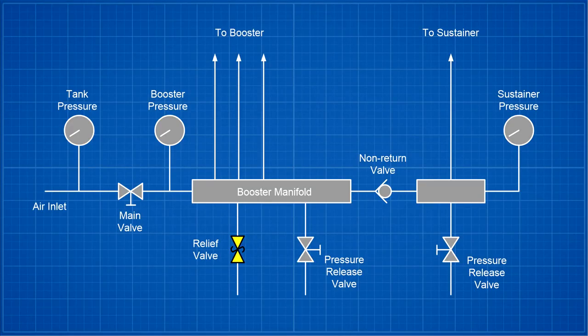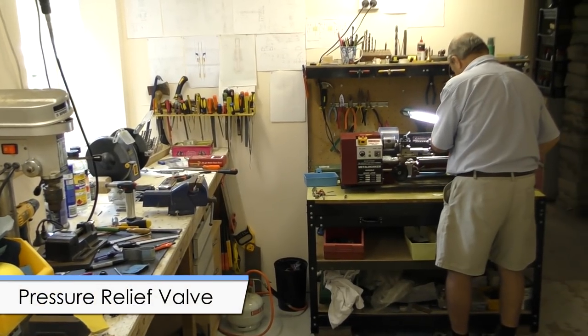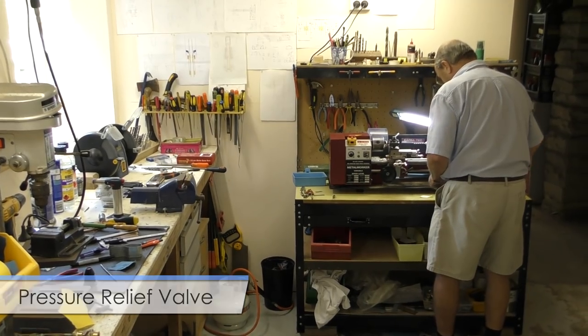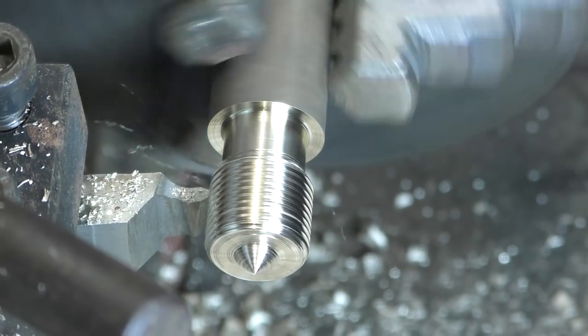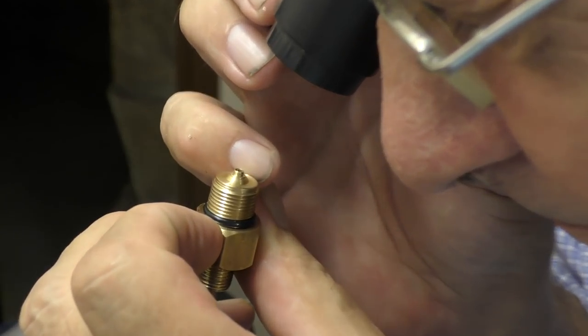Next let's have a look at the relief valve which is designed to start leaking above a certain pressure. This prevents the launcher and rocket from overpressurizing if the main valve gets stuck open for example. We've made this one from scratch to fit our specific requirements.